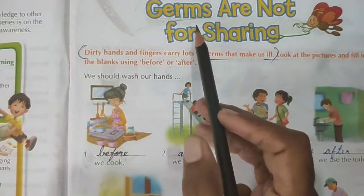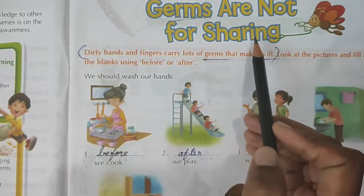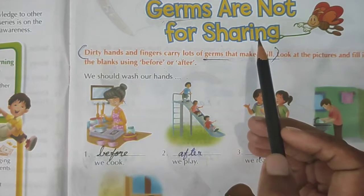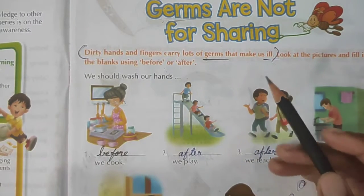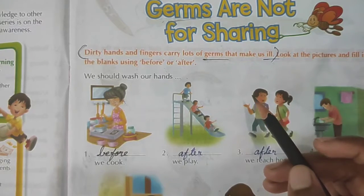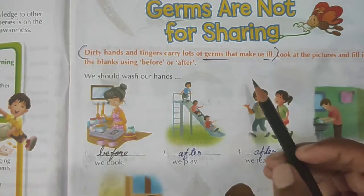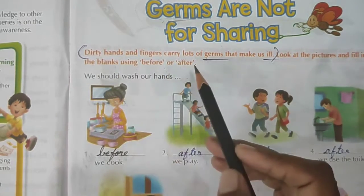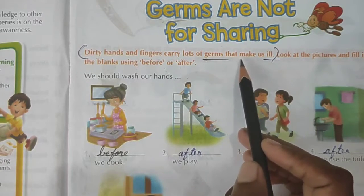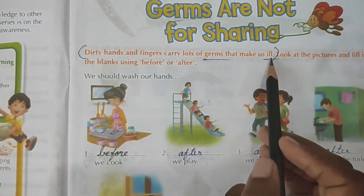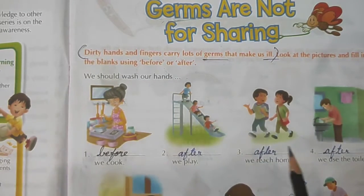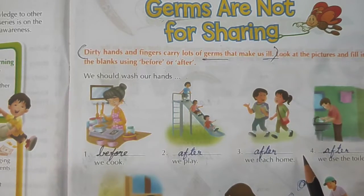All of you please take page number 7. The topic is 'Germs are not for sharing.' What we have learned in this page — dirty hands and fingers carry lots of germs that makes us ill. So to prevent ourselves from the germs we should wash our hands often. That is the only way to prevent ourselves from germs.